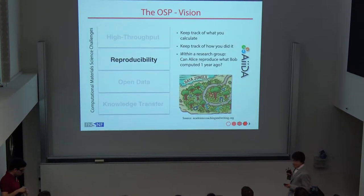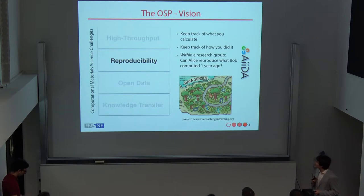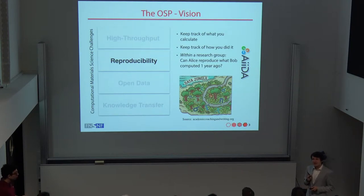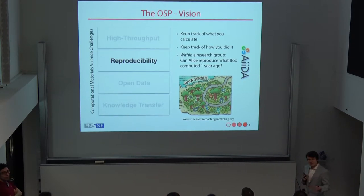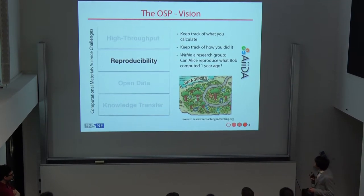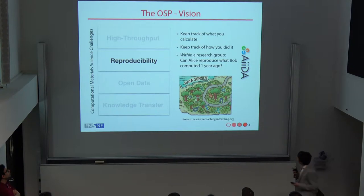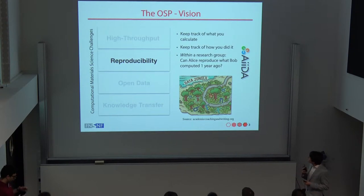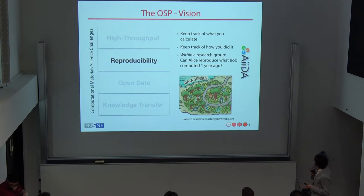The second challenge is reproducibility, and reproducibility starts with yourself. Can you redo a calculation that you did two years ago? Then it goes to your group — can your office mate reproduce the calculation that you did last week? The idea is that by keeping track of how we do things automatically in AIDA, we simplify the task and essentially make it possible to store all of this information for a long period of time. AIDA is our tool for dealing with the reproducibility problem.